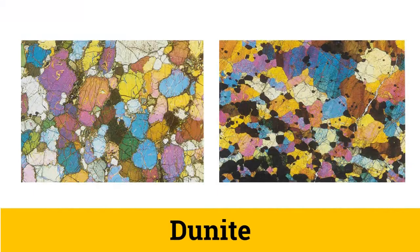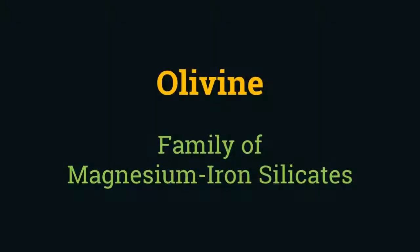In this presentation, we will learn about the olivine family, which is mainly found in the igneous rock dunite. This rock is made up of 90% olivine and is shown here under a polarizing microscope, which depicts olivine minerals in different polarizing colors.